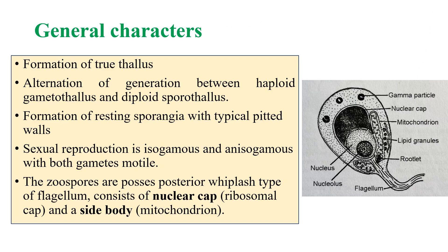The first general character is that it forms a true thallus. Their generations alternate between haploid gametothallus and diploid sporothalus. The gametothallus represents the gamete stage and the sporothalus means spore production. During unfavorable times, resting sporangia are produced with typical pitted walls.